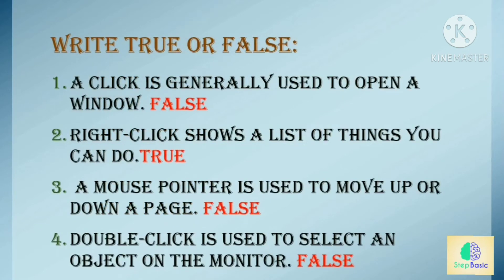Write true or false. A click is generally used to open a window — this statement is false, because double click is used to open a window. Right click shows a list of things you can do — true.